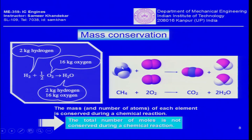An important principle: whenever a chemical reaction takes place — for example, hydrogen burning with oxygen to form water — mass is always conserved. The mass of products equals the mass of reactants. However, the total number of moles is not necessarily conserved. For instance, 1 mole of H2 reacts with 0.5 moles of O2 to give 1 mole of H2O; converting to masses: 2 kg H2 + 16 kg O2 = 18 kg H2O — mass is conserved, but mole count changes.